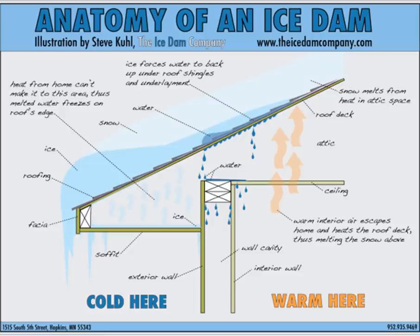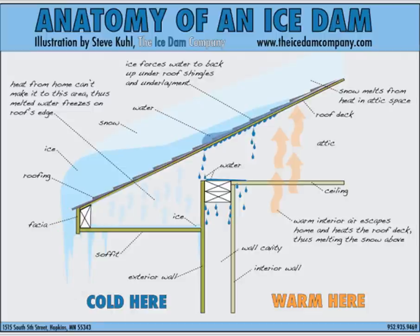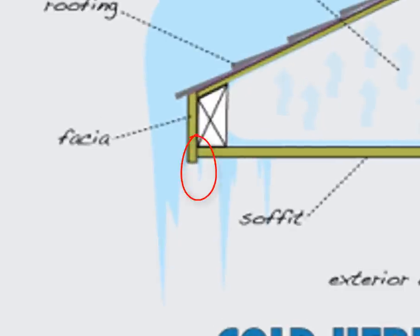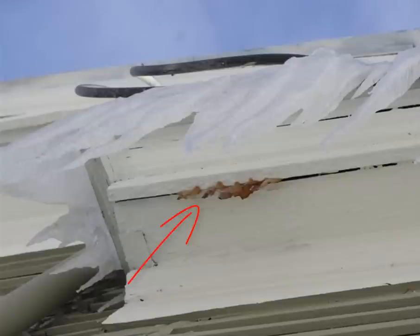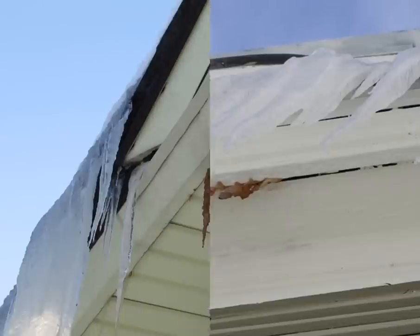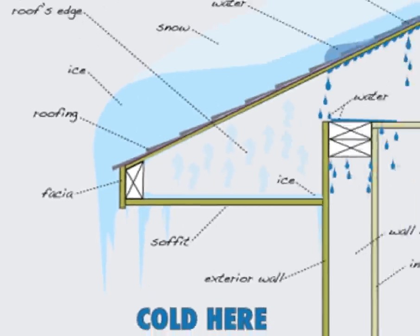When looking at an ice dam from the outside, if you see icicles forming at the edge of a roof, you don't necessarily have an ice dam — that can happen on an unheated garage. But if you see icicles coming out between the fascia and your soffit, especially these nasty little brown icicles, that is a telltale sign that you've had water leaking in, typically through an ice dam. What turns the water brown is tannins in the wood — after the water travels through the wood, it stains it and you get brown icicles.